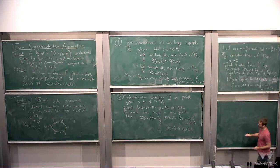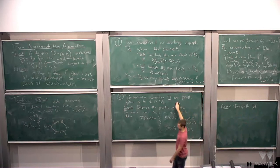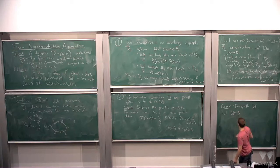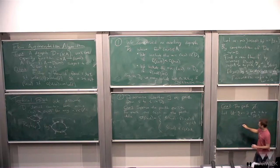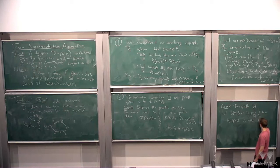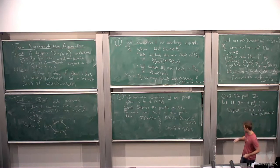Case two: the path from s to t in D_f doesn't exist. Now we want to find a small cut. Let U be the set of all vertices v such that there exists a path from s to v in D_f. In particular, s is in U since a one-vertex path still counts. And W = V minus U. Because the path doesn't exist, s is in U and t is in W.